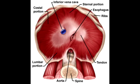What perforates the diaphragm at the level of T12? At the level of T12, the diaphragm is perforated by the aorta, the thoracic duct, and the azygous vein.